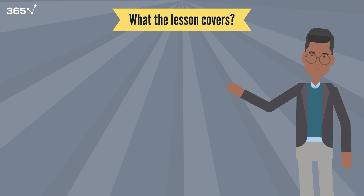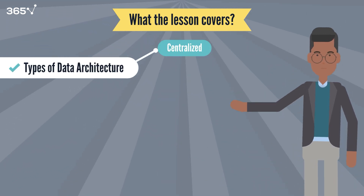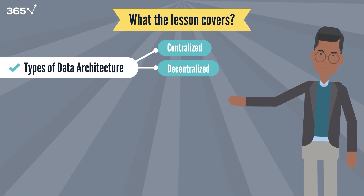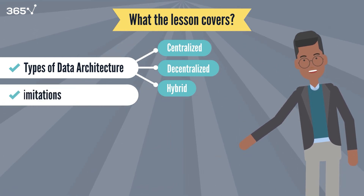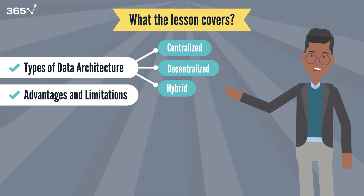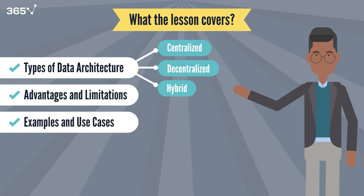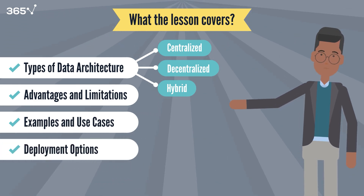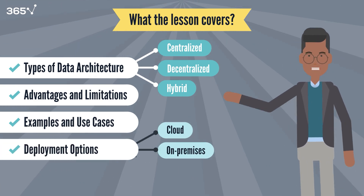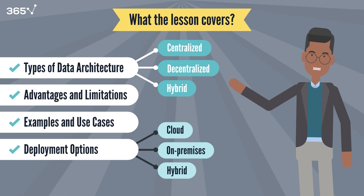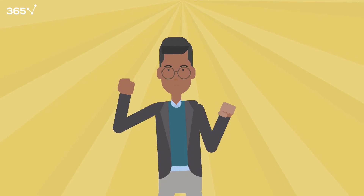We'll cover the three main types of data architecture — centralized, decentralized, and hybrid — advantages and limitations of each architecture type, real-world examples and use cases, deployment options including cloud, on-premises, and hybrid environments, and how to choose the right architecture for your needs.